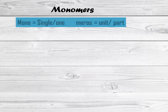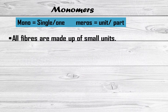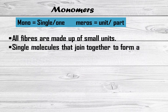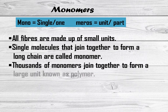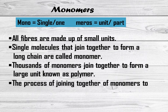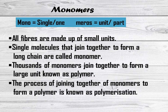Let us study about monomers. The term monomer has been derived from two Greek words: mono, which means single or one, and meros, which means unit or part. All fibers are made up of small units. Single molecules that join together to form a long chain are called monomers. Thousands of monomers join together to form a large unit known as a polymer. The process of joining together of monomers to form a polymer is known as polymerization.